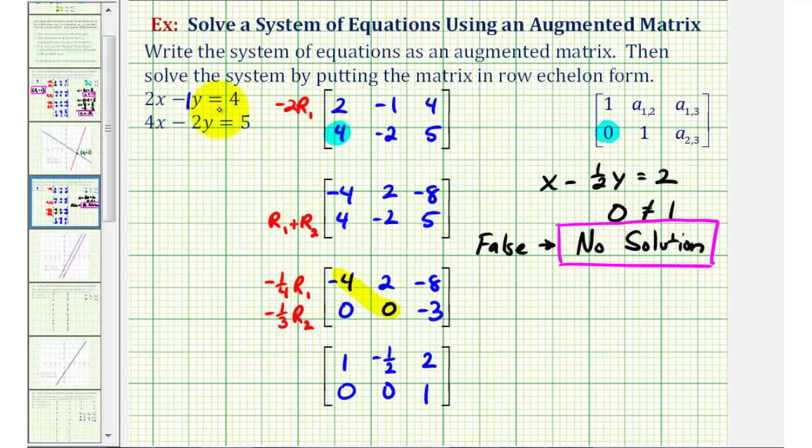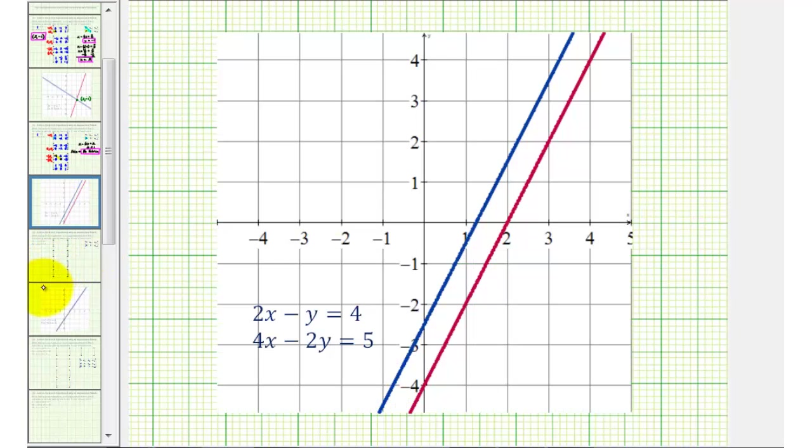Now if we want to verify this, we could graph the two lines to make sure these two lines don't intersect. Here are the graphs of the two linear equations. Notice how the lines are parallel, which means they never intersect, verifying that our system has no solution. I hope you found this explanation helpful.